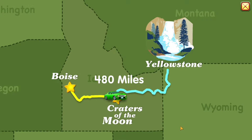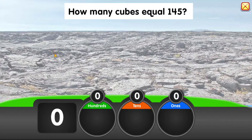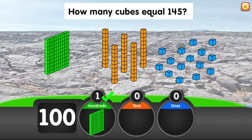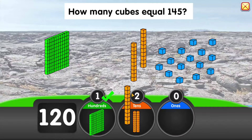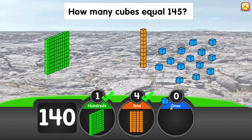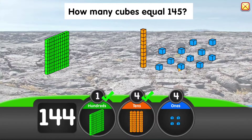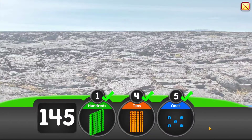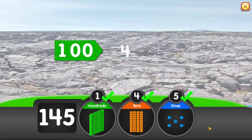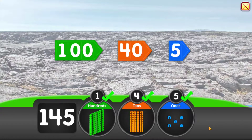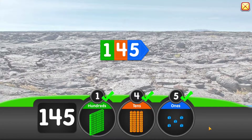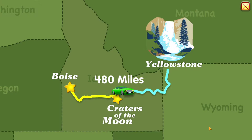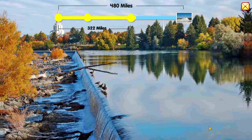Our next stop is 145 miles away. How many cubes equal 145? 100 plus 40 plus 5 equals 145. Look, Idaho Falls!